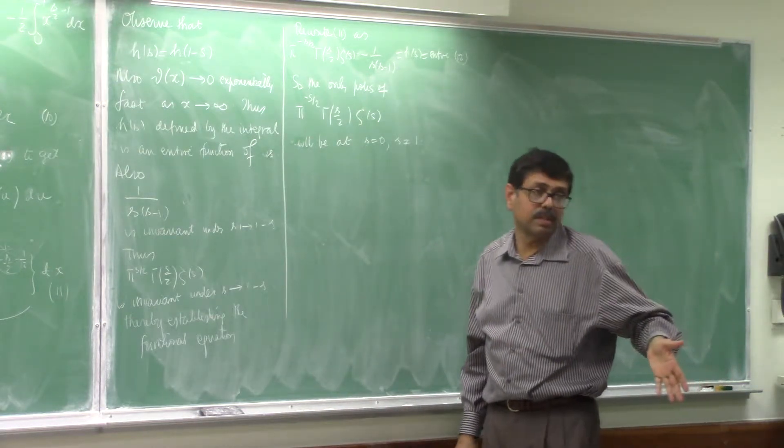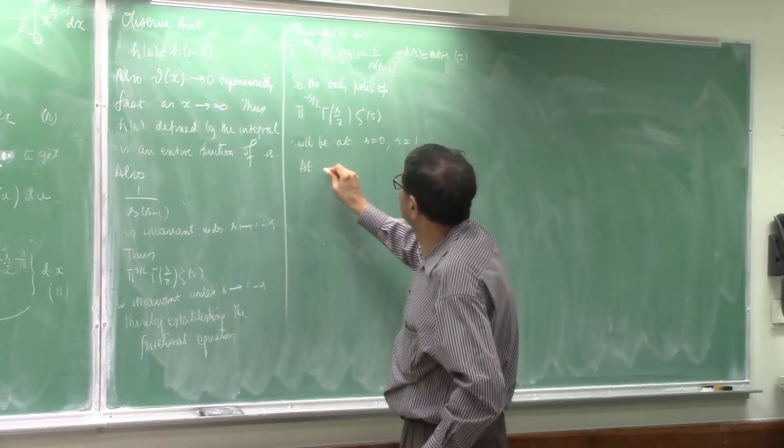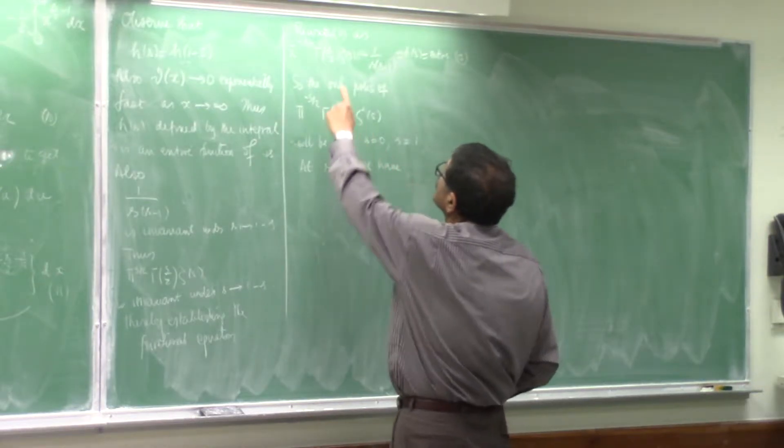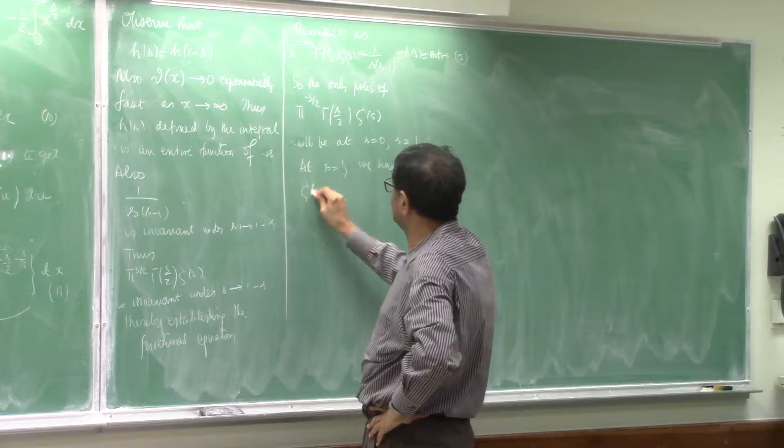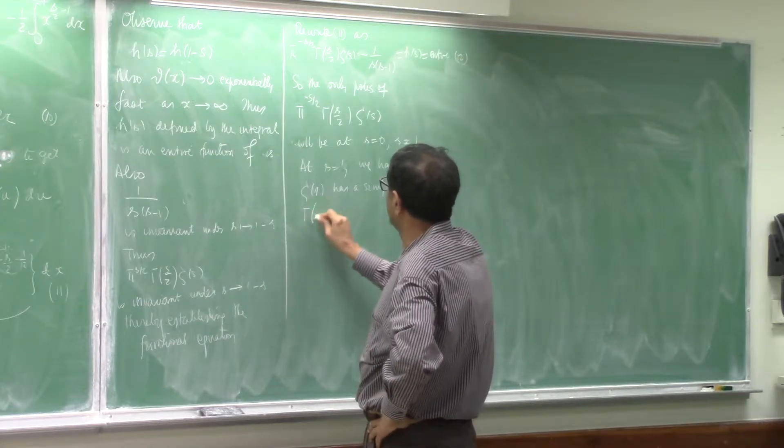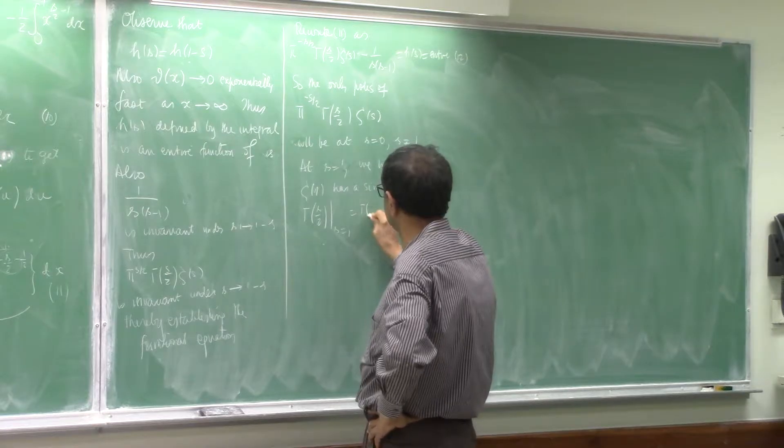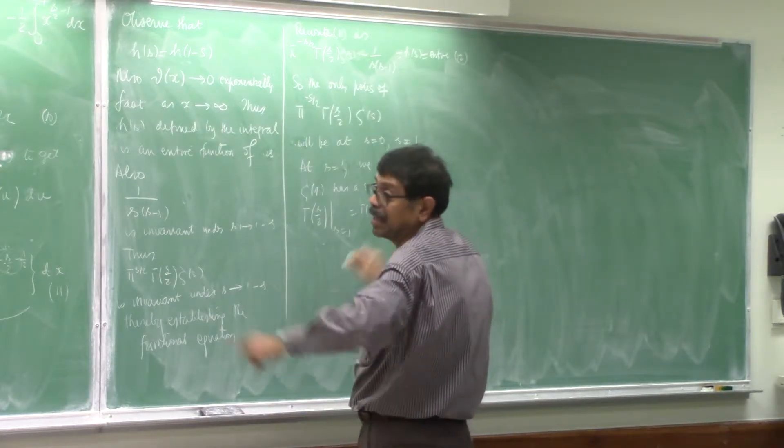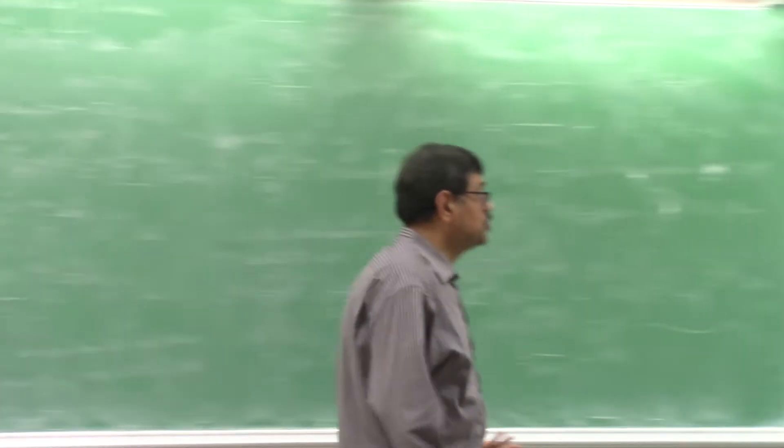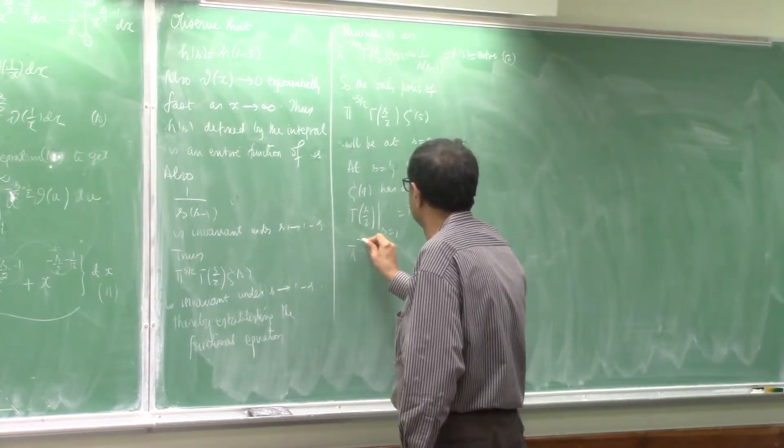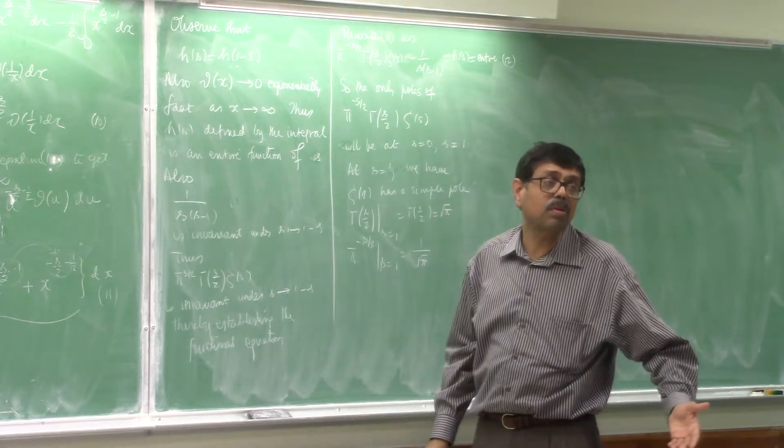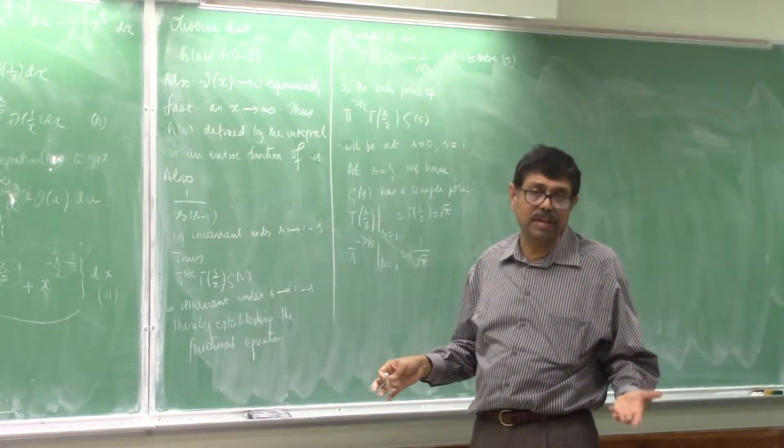s equal to 1 is understood. At s equal to 1, we have zeta 1 as a simple pole. Gamma s over 2 evaluated at s equal to 1 is gamma half is square root of pi. That's why I made that little calculation there. Gamma half equal to square root pi. And pi to the minus s over 2 at s equal to 1 is 1 over square root of pi. So it's a simple pole with a residue 1, which we have already seen.